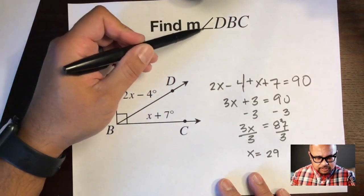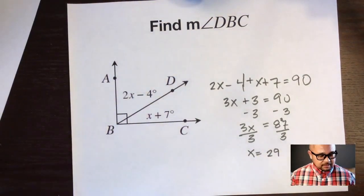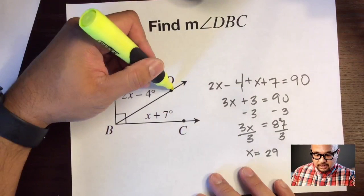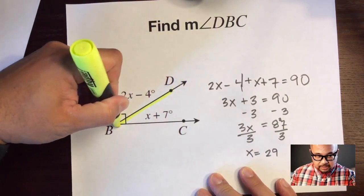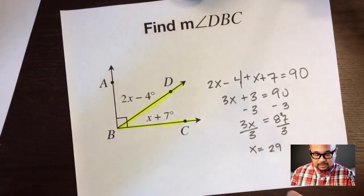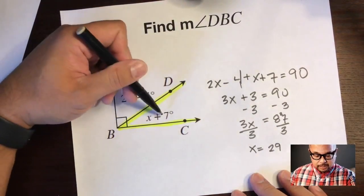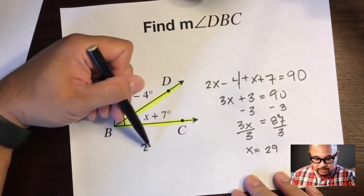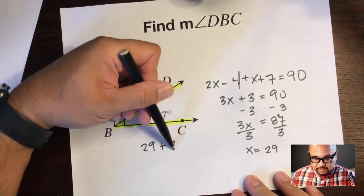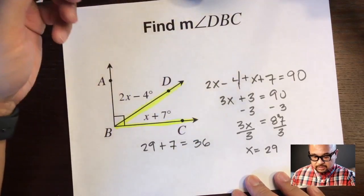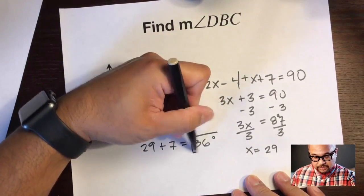So yeah, 29. However, the question doesn't ask for x, but we found x. The question asked for the measure of angle DBC. Which one is angle DBC? Well, if we connect the dots, we go from D to B to C right here, so it's asking for the measure of this angle right here. We have x and we know that DBC is represented by x plus 7, so we'll just substitute x with 29. So 29 plus 7 is equal to 36 degrees. Now we found the angle, so 36 degrees.